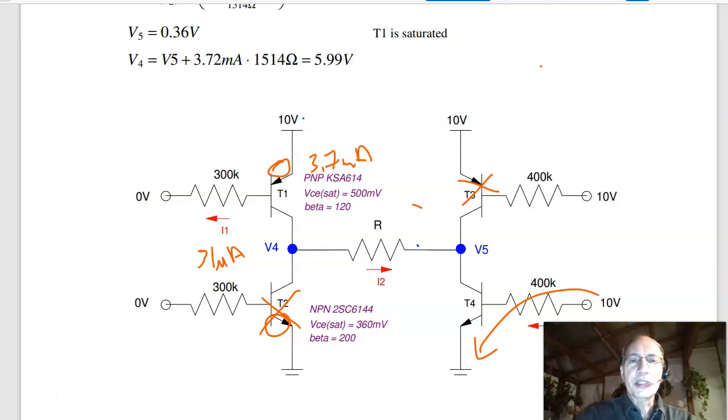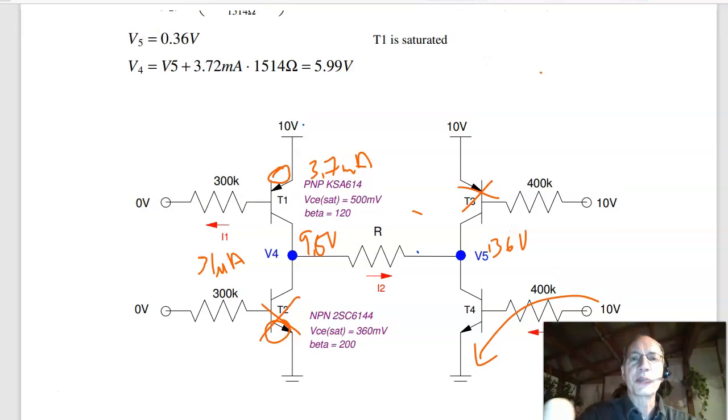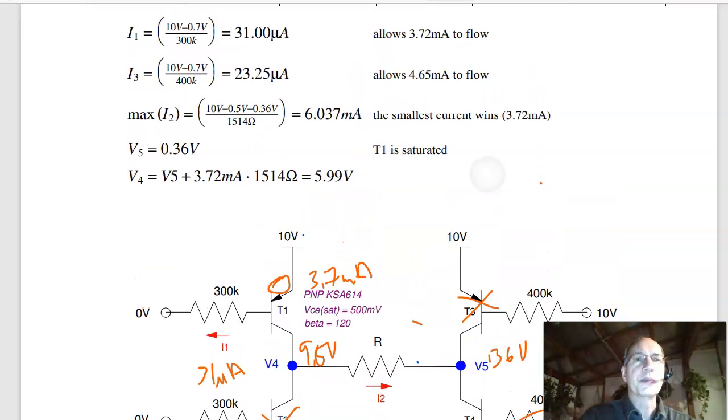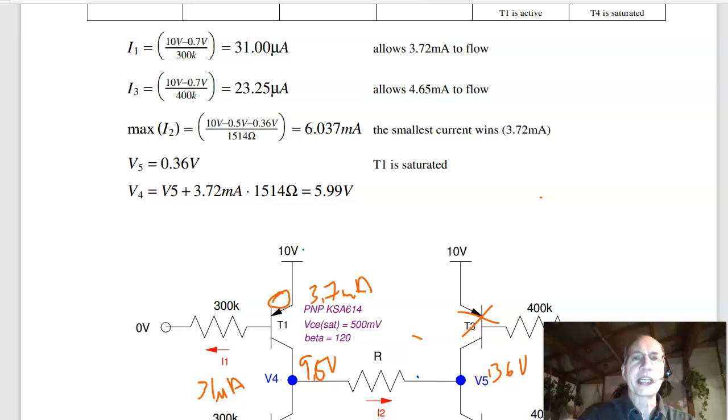And R limits the current. At best, this is 9.5 volts. This is 0.36 volts. When you saturate, T4 is 0.36 volts, T1 is 0.5 volts. The remaining voltage across R is the limited current from R for I2. So the most I2 can be is 6 milliamps. Now I've got a current limiter. The current is going to be the smallest of these three, the 3.72, 4.65, and 6 milliamps. Here's the winner.